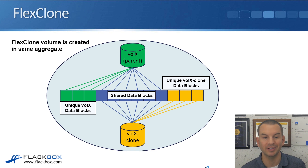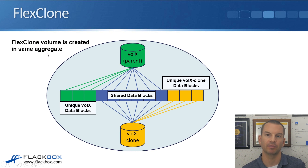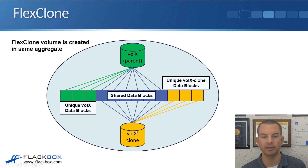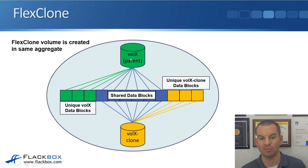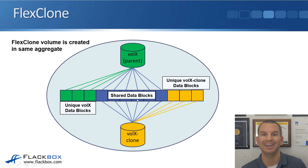Let's look at a diagram. A point to note: the FlexClone volume is created in the same aggregate as the parent volume. Here we've got volX as the parent volume, and then we take a clone of that, which is volumeX clone. When the clone is first taken, we just have the blue shared blocks between the parent and the child — a single copy of the blocks on disk. After the FlexClone is taken, we can make changes to the volX parent, shown in the green blocks on the left, and we can also make changes to the clone, shown in the yellow blocks on the right. Any changes after that are written to new blocks on disk for both volumes.